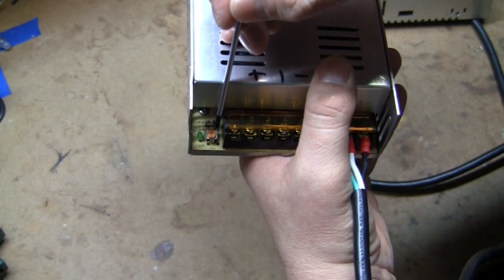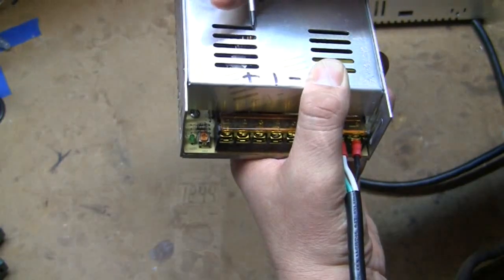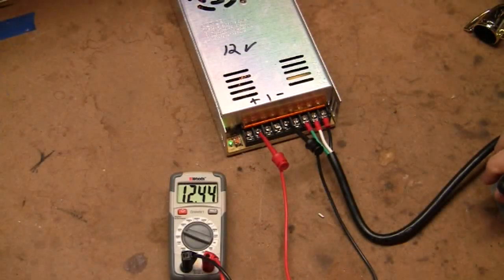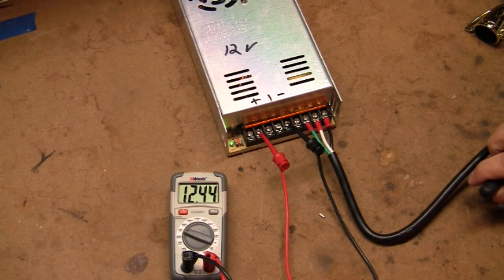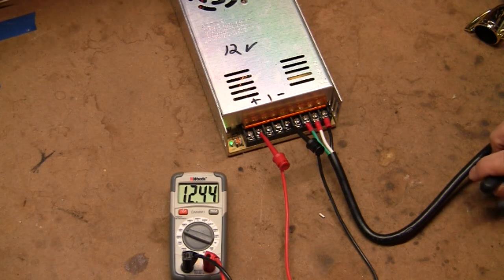Then you have a screw that you use to adjust the voltage. The recommended voltage for LED lights for a 12-volt light strand is 11.97 volts. For 5-volt lights, the recommended setting is 4.97 volts.